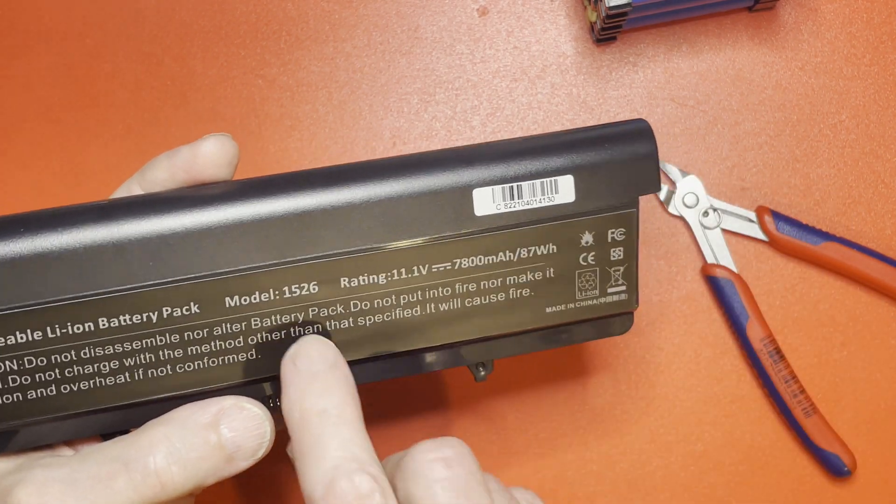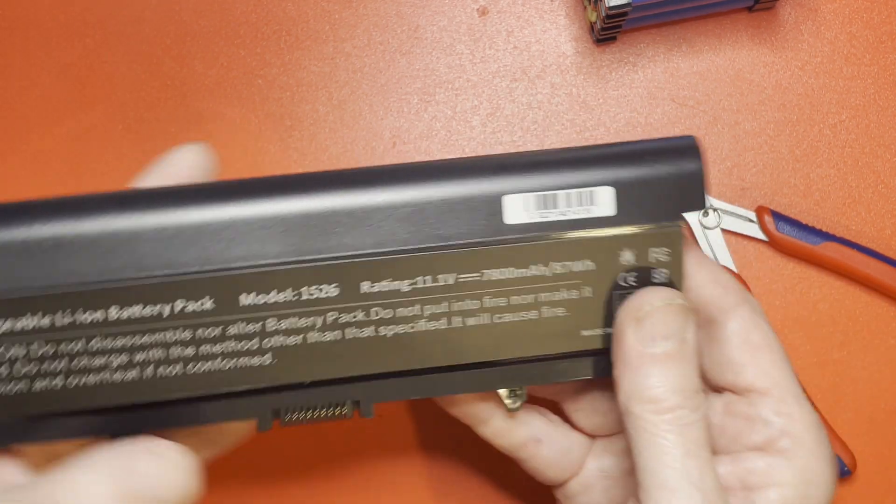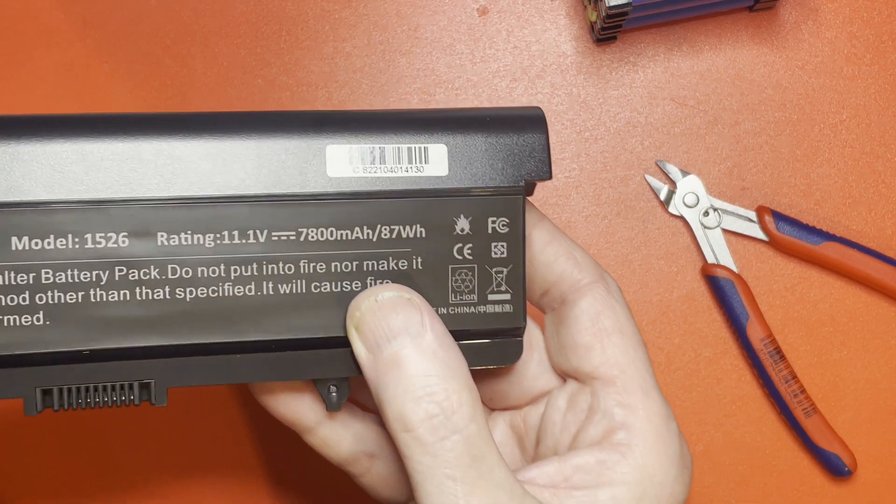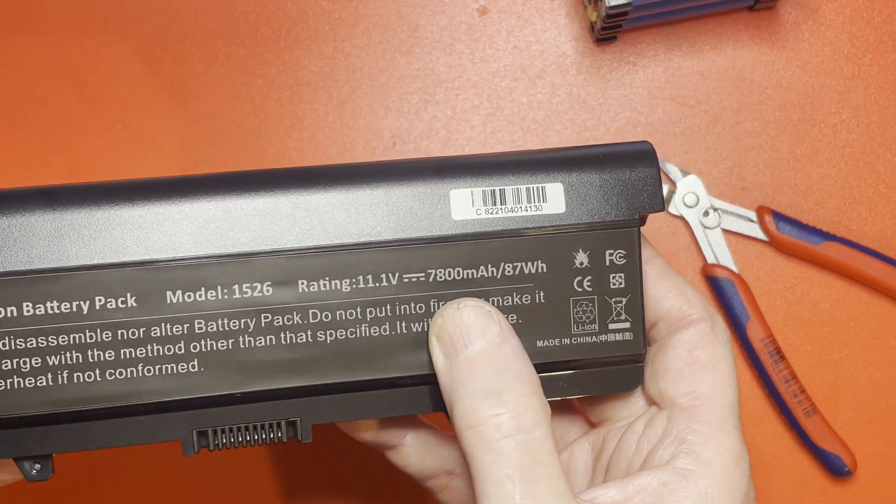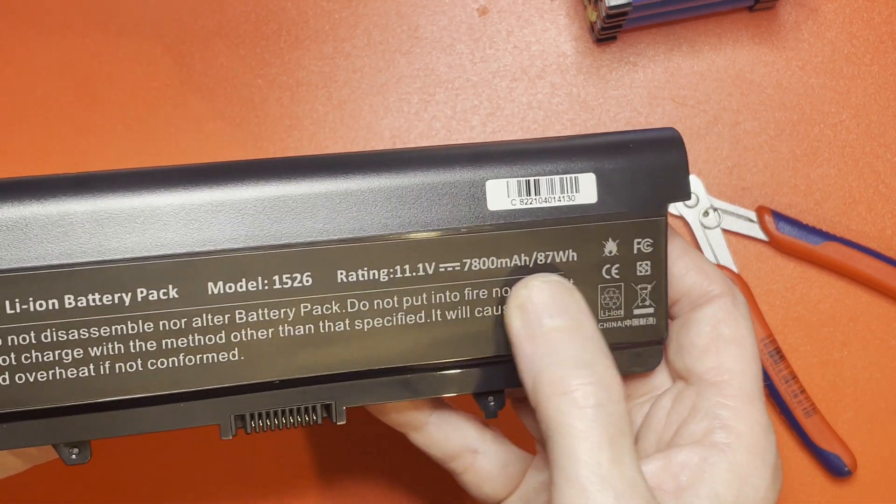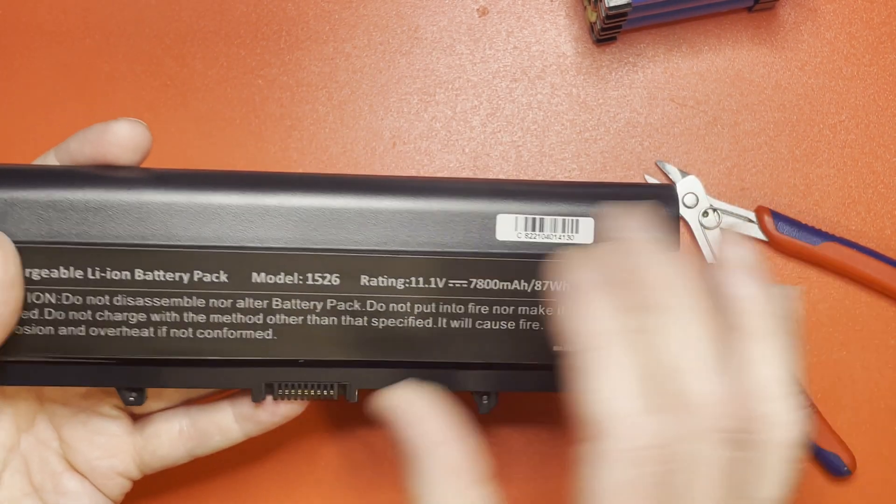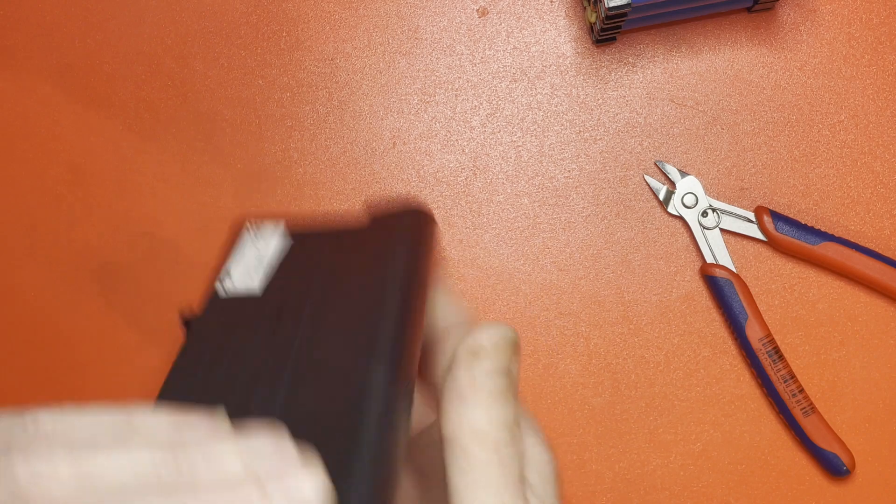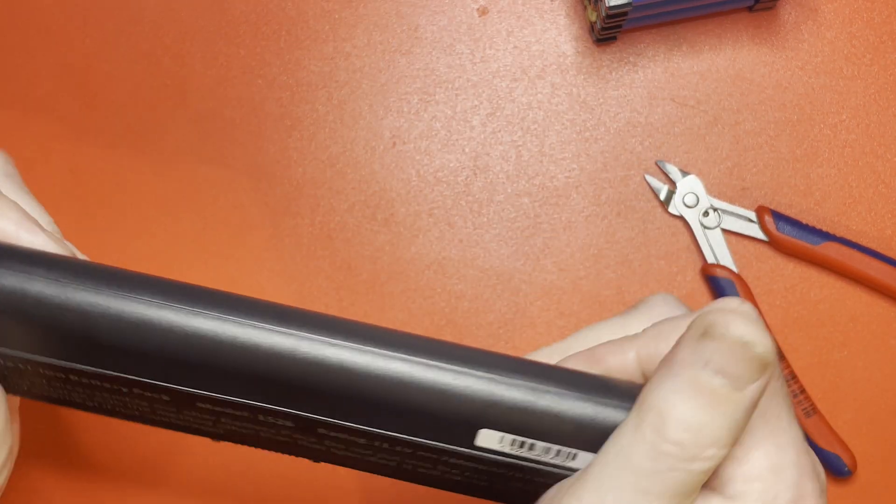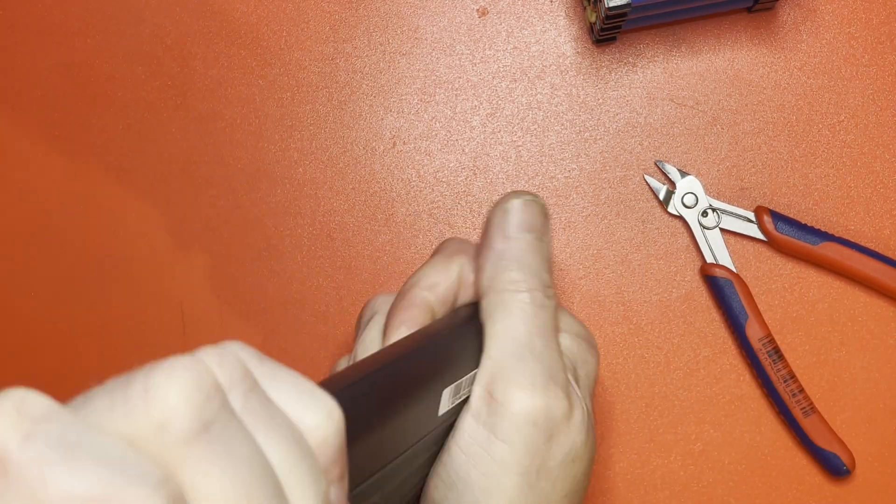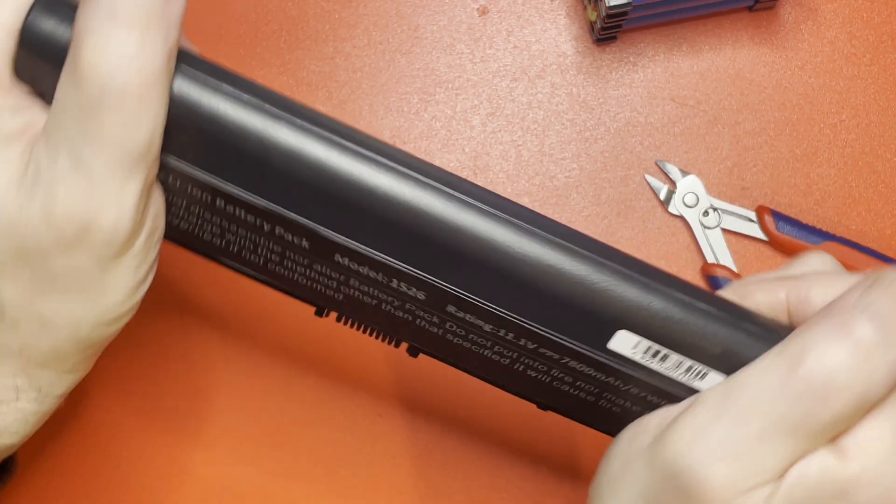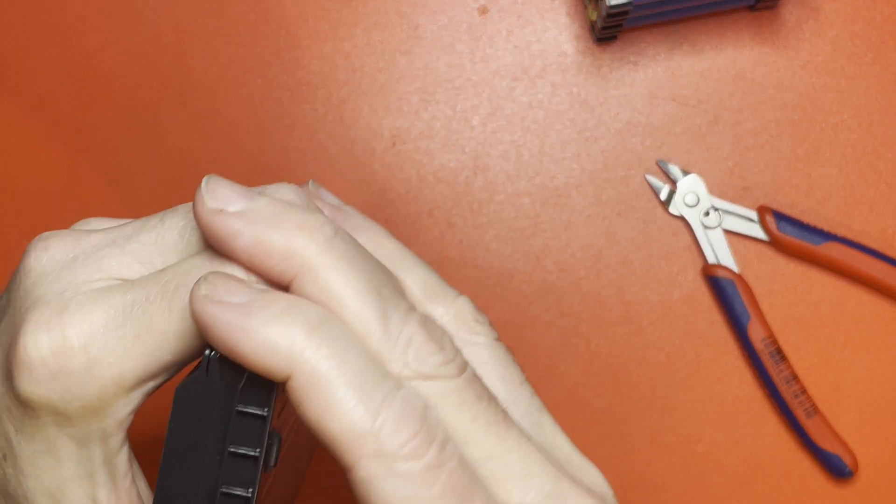They're actually for a Dell model 1526, these particular ones. You can see what they claim to be - 7.8 milliamp hour. There's nine cells, so three series, three parallel. So what I'm going to do with these, as I say, oh, that looks like it's going to, it popped as soon as I started gripping and twisting it, so that's good.